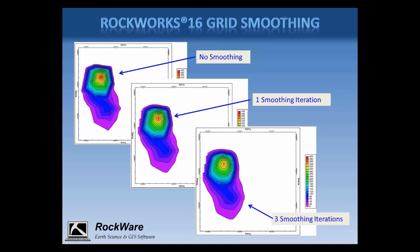My solution, if I really liked the contours in the lower right-hand corner, would be to use three smoothing iterations but also turn on the high fidelity option to bump the high value in the center of the plume back up to the highest measured value.